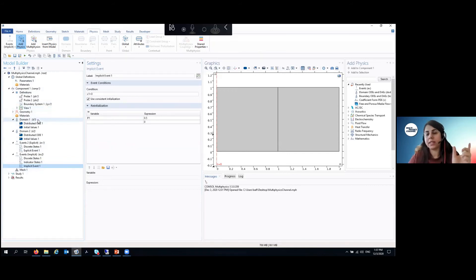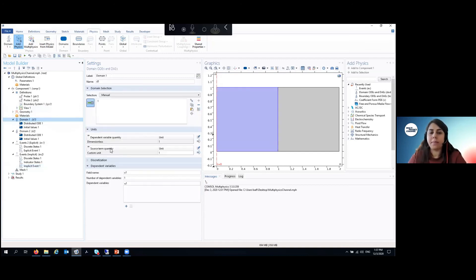For example, you want to have a parameter that is, until a certain point of time, a function of u1, the variable that is defined by domain one, and after a certain point, it will be based on u2, a variable from domain two.